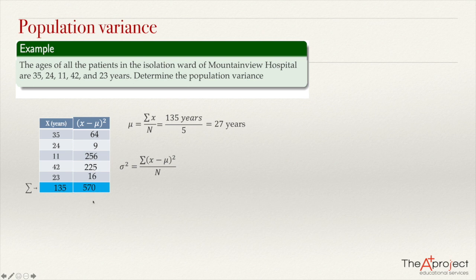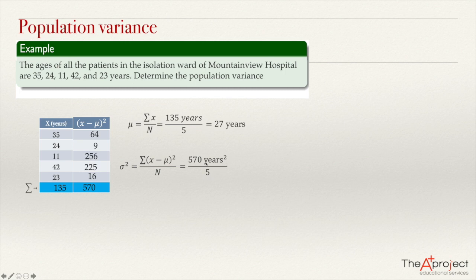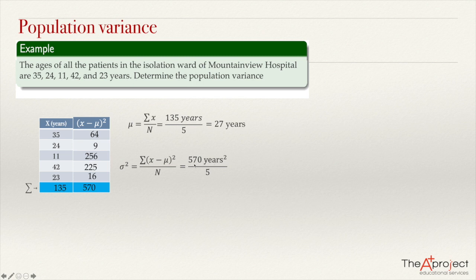This 570 is the numerator of our fraction. So the variance equals 570 divided by 5. Notice the unit here is years squared — because when we square the deviations (e.g., 8 years squared gives 64 years²), the units become years squared. So 570 divided by 5 gives us 114 years squared as the population variance.